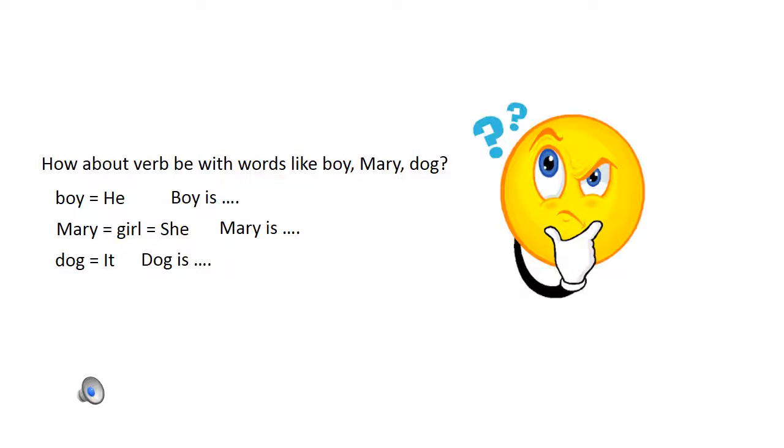How about verb be with words like boy, Mary, and dog? Boy is he, so you say boy is. Mary is she, so you say Mary is. Dog is it, therefore dog is.